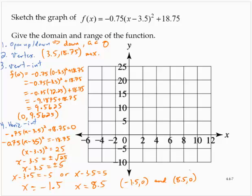All right, so let's use all that information to sketch the curve. We know it opens down. We know the vertex is 3.5 and 18.75. So 3.5 and 18.75 would be about here, sorry about that.